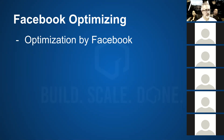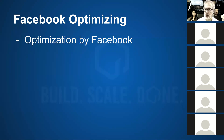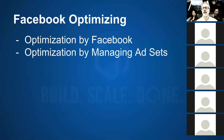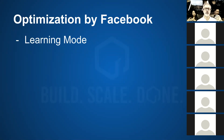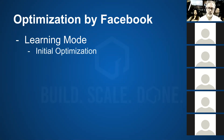Optimization by Facebook is one thing — that is when Facebook does its magic and tries to make things go better and better. Then there's optimization by managing ad sets. With Facebook's optimization, we don't really have all that much control over that, but we talked already about the learning mode. The control would be to allow Facebook the opportunity to optimize and the time it takes for them to get things done. So there's an initial optimization.